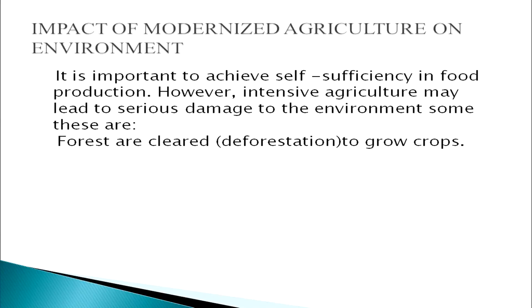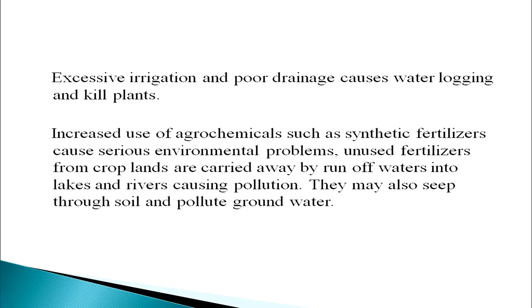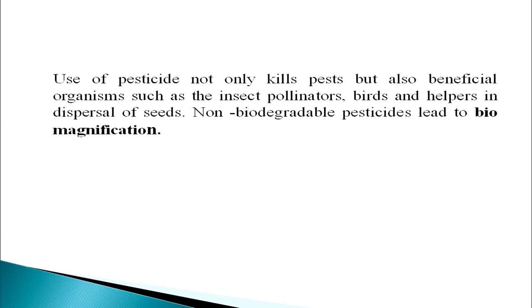Impact of modernized agriculture on the environment: it is important to achieve self-sufficiency in food production; however, intensive agriculture may lead to serious damage to the environment. Forests are cleared to grow crops. Excessive irrigation and poor drainage causes waterlogging and kills plants. Increased use of agrochemicals such as synthetic fertilizers causes serious environmental problems. Unused fertilizers are carried away by runoff water into lakes and rivers, causing pollution, and may also seep through soil and pollute groundwater. Use of pesticides not only kills pests but also beneficial organisms such as insect pollinators, birds, and seed dispersers. Non-biodegradable pesticides lead to biomagnification.